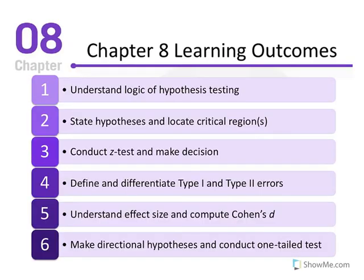The learning outcomes for this chapter are as follows. We'll understand the logic of hypothesis testing, be able to state hypotheses and locate critical regions, conduct a Z-test and make decisions regarding a hypothesized population, define and differentiate between Type 1 and Type 2 errors, compute Cohen's D for effect size, and make directional hypotheses and conduct a one-tailed test.